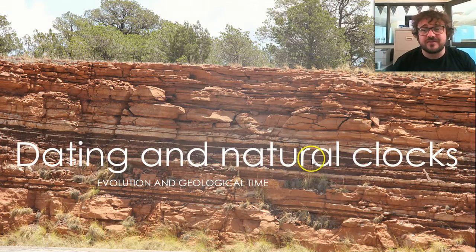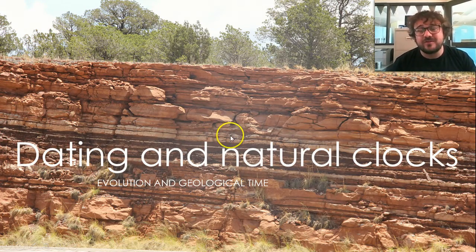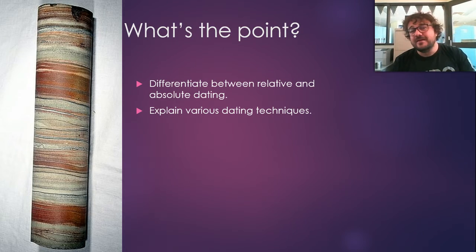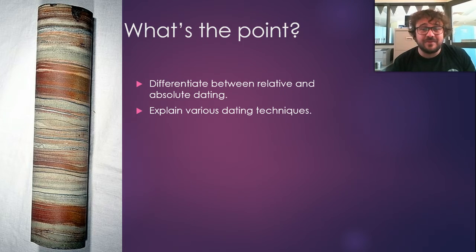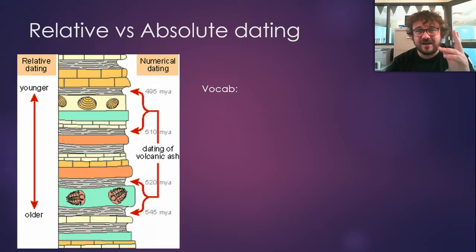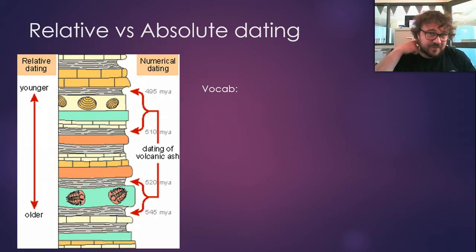Natural clocks. Natural clocks basically are things we can use in nature to tell how old something is, or tell the time of when it was done. Basically, you want to be able to differentiate between relative and absolute dating — those are two different terms you need to know what they mean. And you want to explain various dating techniques.